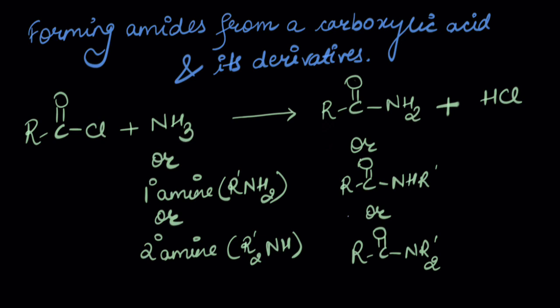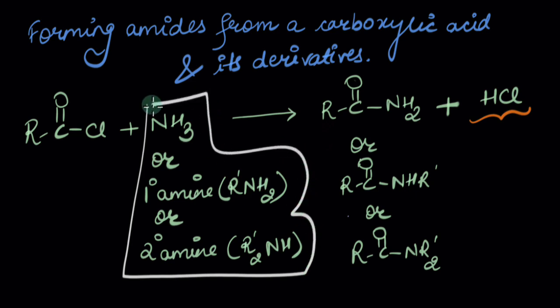So when I treat an acid chloride with ammonia or 1 degree or 2 degree amines, I'll get the corresponding amides. And HCl would be my side product. If I don't want to take excess of these nitrogen compounds, what do I do? I use a base which could be pyridine or a 3 degree amine because I know they'll not hinder the reaction or cause an issue to the reaction.